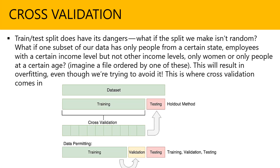Cross-validation: the training and test split does have its cautionary dangers. What if the split we make isn't random — we haven't shuffled properly? Or what if one subset of our data has only people from a certain state, employees with a certain income level but not others, only women, or only people at a certain age? If you're only taking one part, it's not going to classify properly — it needs both the positive and negative data so that machine learning can make that comparison, especially if you're using a classifier. This will result in overfitting, and this is where cross-validation comes in.